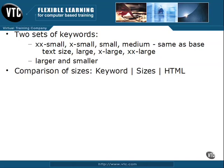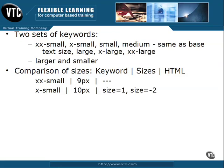Now let's take a look at a comparison of our keyword system, the approximate sizes in pixels, and for those familiar with HTML sizes, what the equivalent would be in HTML. First, we have xx-small, which is about 9 pixels, and there's no equivalent to that in standard HTML sizing. Then we have x-small, which is about 10 pixels, and it's size 1 for HTML, or negative 2 from your base font size. For those who don't know about HTML sizing, don't worry — I've included it here to be thorough.